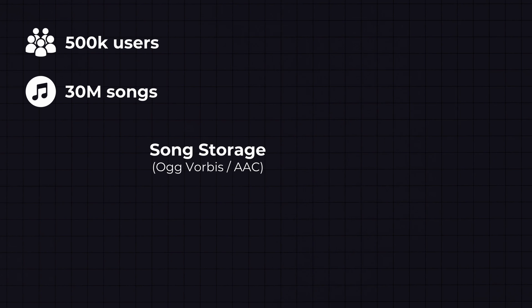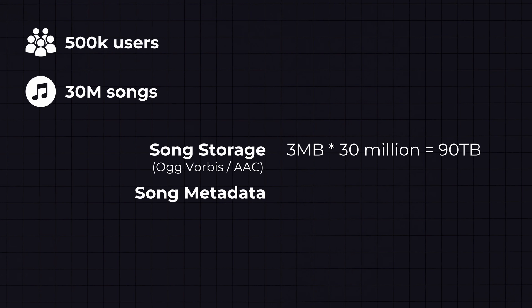First, we need storage for our songs. Spotify and similar services often use formats like Vorbis or AAC for streaming. Assuming an average song size of 3 megabytes, we need 3 MB × 30 million = 90 terabytes for songs. We also need to store song metadata — title, artist name, and so on — at about 100 bytes per song, giving us 100 bytes × 30 million = 3 gigabytes.